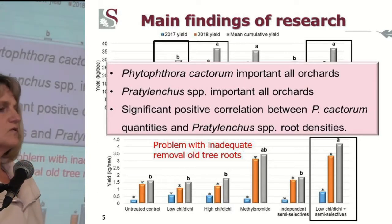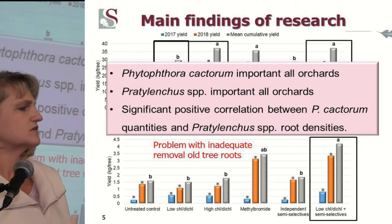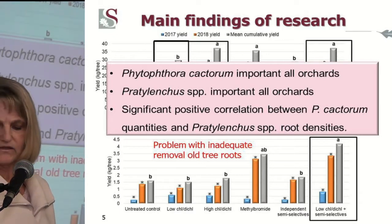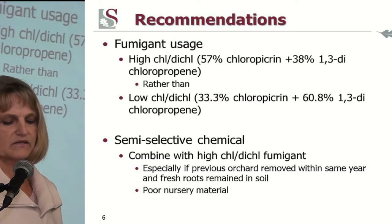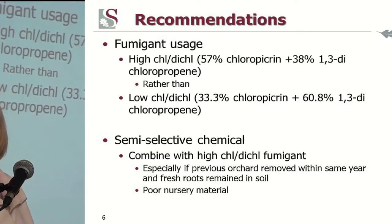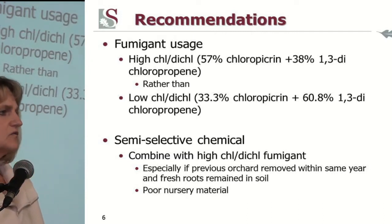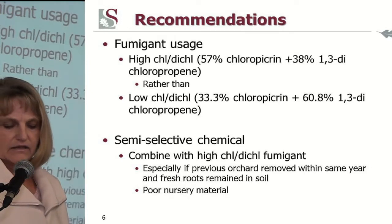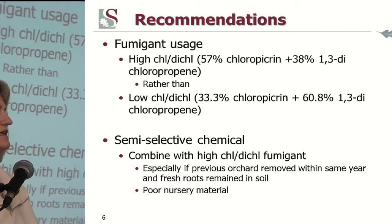The organisms that we saw were prevalent in the trials were Phytophthora and Cactorum, and we also think there is an interaction between them. So we think in ARD, these pathogens are important to control. The recommendation is to rather use the high chloropicrin fumigant instead of the standard low that most growers have been using.